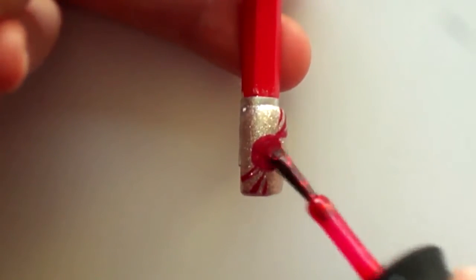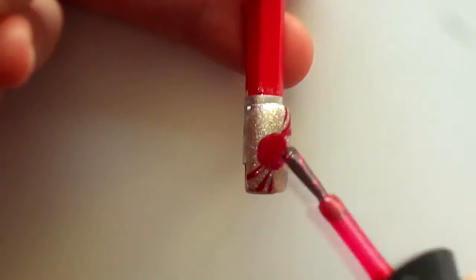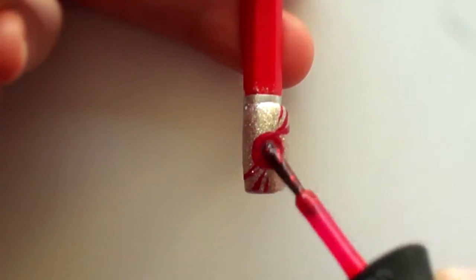Next, use a clear nail polish - you can use a top coat if you want to - and paint it over this red circle. Today I'll be using this red glitter polish instead.